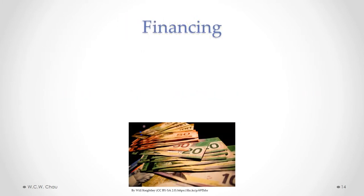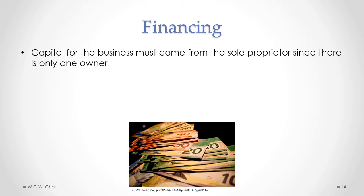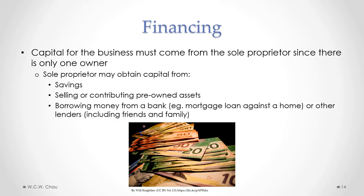Where does the financing for a sole proprietorship come from? Since there is only one owner, the capital has to come from the sole proprietor. Sources include personal savings, selling or contributing assets already owned, or borrowing money from a lender such as a bank or friends and family. For example, if the sole proprietor already owns a house, they could get a mortgage against that house to obtain a bank loan.